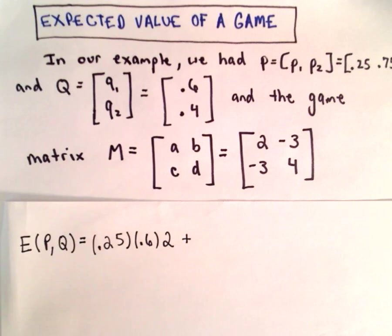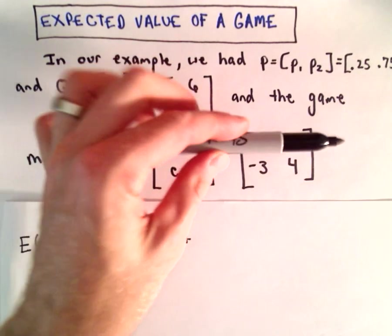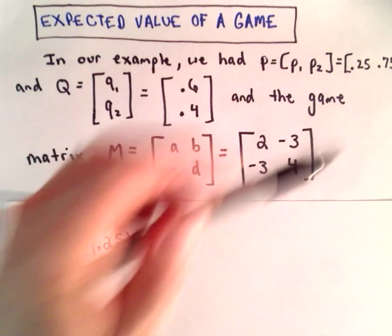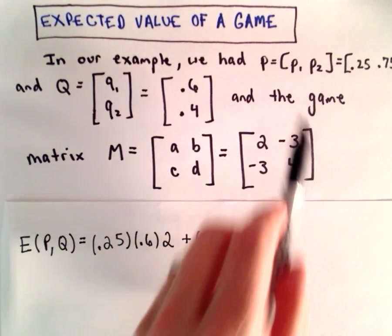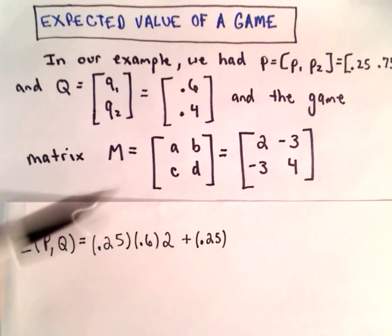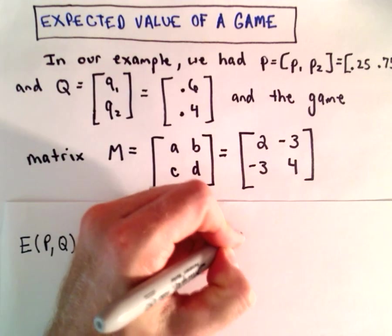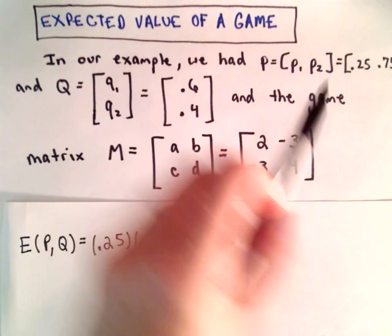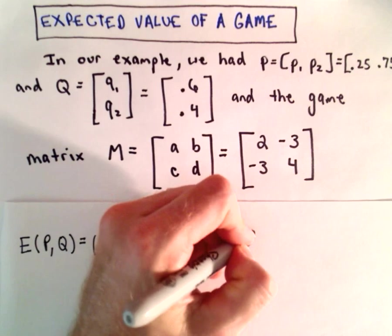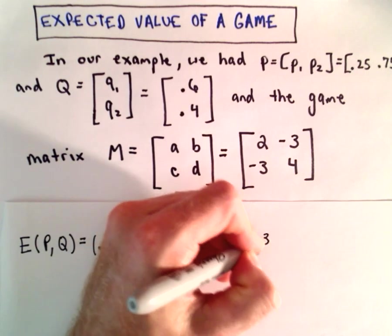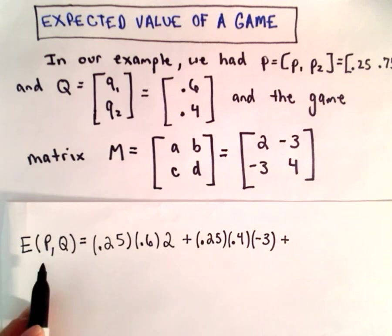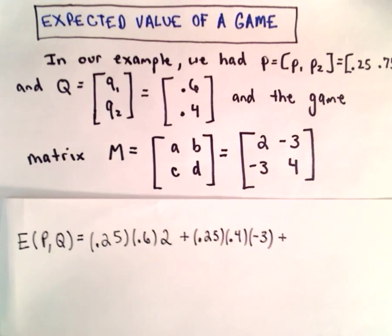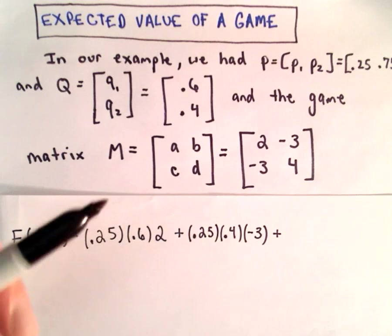And now we're just going to continue this process. So the probability of the first row being played is 0.25. The probability of the second column being played is 0.4. And if the first row, second column is played, there's going to be a loss of $3 for the row player. So we're computing the expected value for the row player.